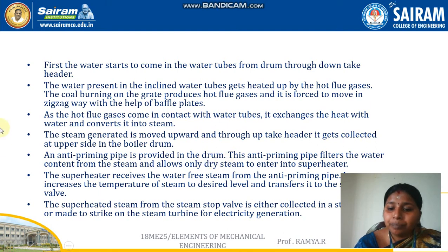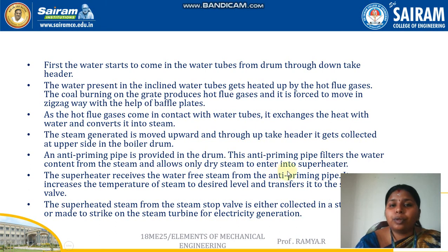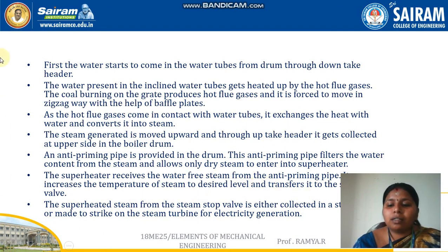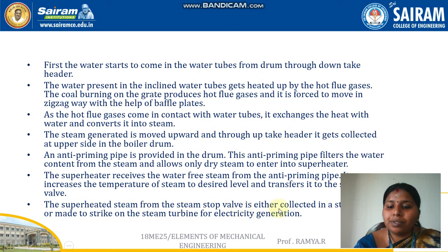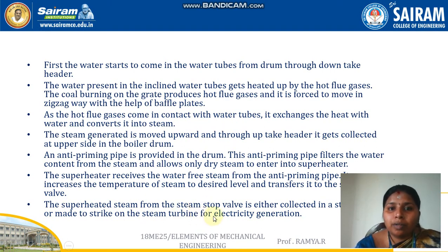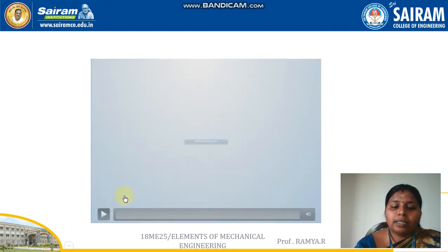The steam generated moves upward through the uptake header and is collected at the upper side of the boiler drum. An anti-priming pipe in the drum filters out water content and allows only dry steam to enter the superheater. The superheater increases the steam temperature to the desired level and transfers it to the steam stop valve. The superheated steam is then either collected in a steam drum or sent directly to a steam turbine for electricity generation.